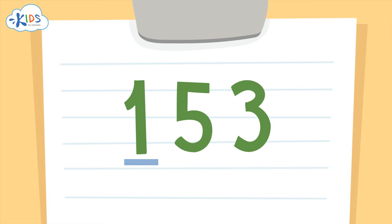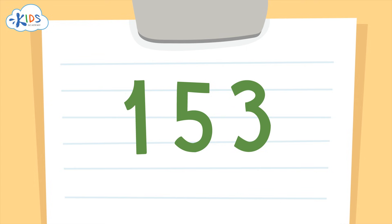If you want to round a number to the nearest hundred, you actually have to look at the tens place to help you decide whether to round up or round down. I like to underline the place I'm rounding to — the hundreds place — and draw an arrow to the place that will tell me whether to round up or round down: the tens place. You always look one place to the right of the place that you want to round to. So in this case, we're rounding to the nearest hundred, so we'll have to look at the place to the right of the hundreds, which is the tens.